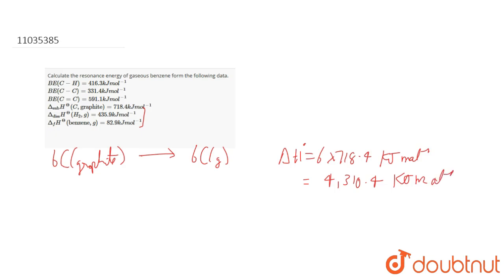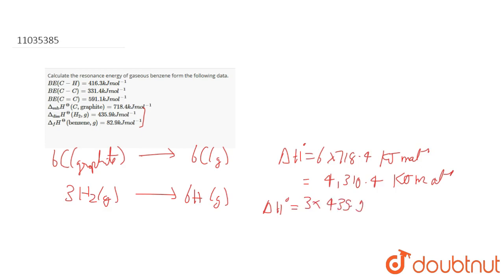The next equation is the dissociation of H₂ gas: 3H₂(gas) → 6H(gas). The delta H for this would be 3 × 435.9, which equals 1307.7 kJ/mol.